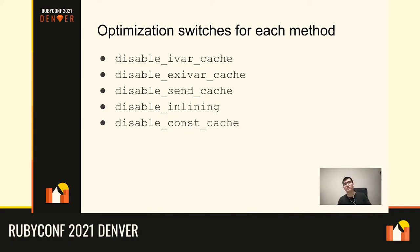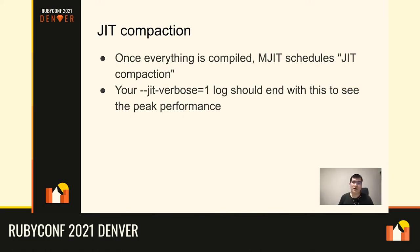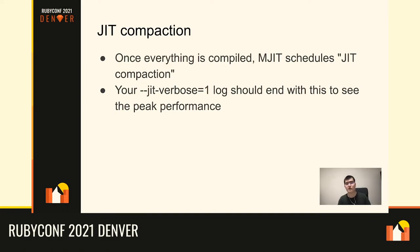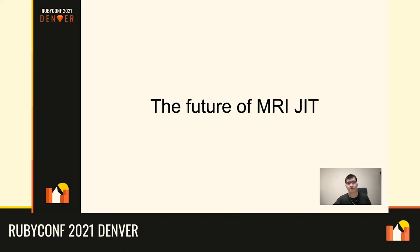JIT compaction is a technique used after every method has been compiled at least once. Once all methods — say 4,000 methods — have been compiled, MJIT tries to compact the native code into a very compact memory location. This deduplicates shared functions across methods, reducing code size and significantly improving CPU cache efficiency. You'll see a 'JIT compaction' log in --jit-verbose=1 output. To see peak performance, you need to see this JIT compaction log.